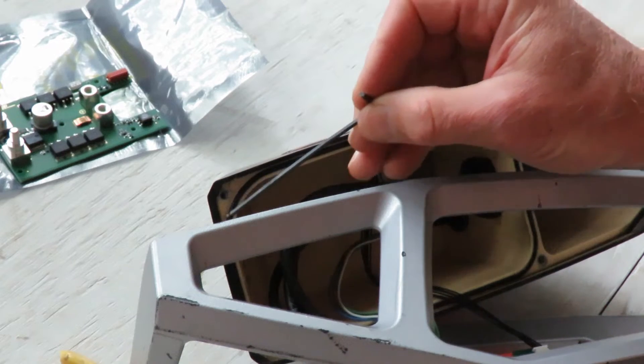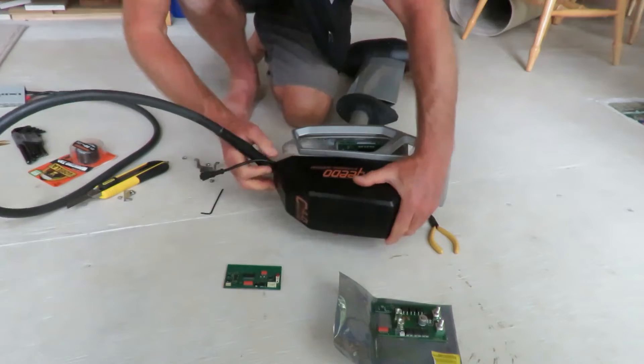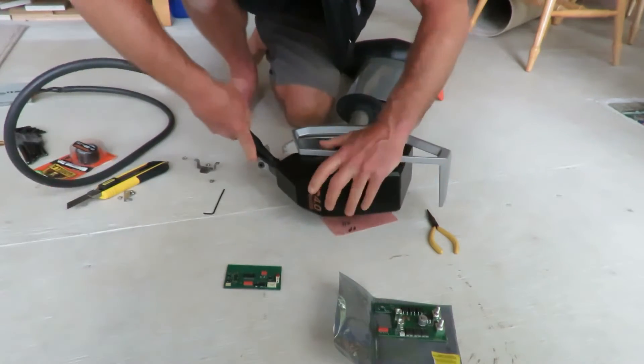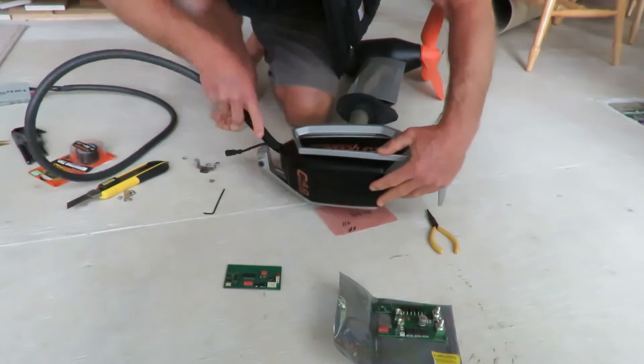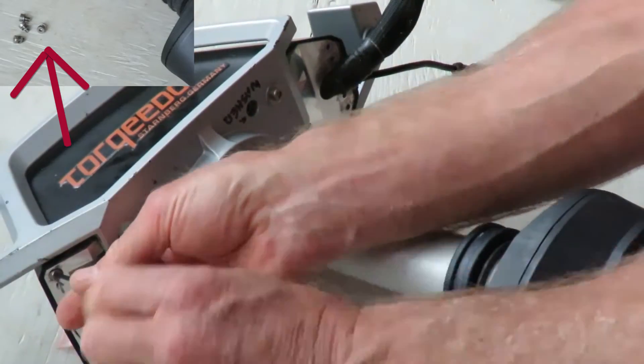Before we replace the top of the motor, we need to check the o-ring that seals the motor so that water doesn't get in. Then we can replace the top of the motor and fasten everything back together with the screws that we removed at the beginning.